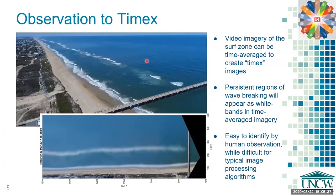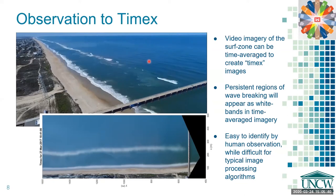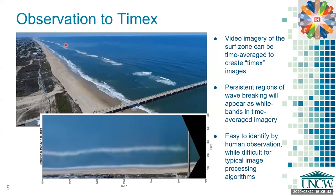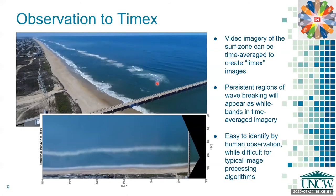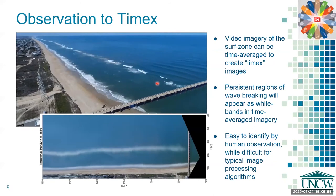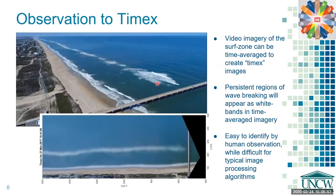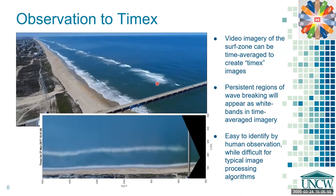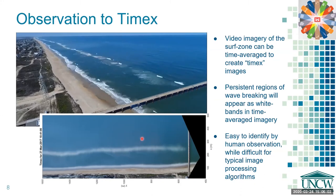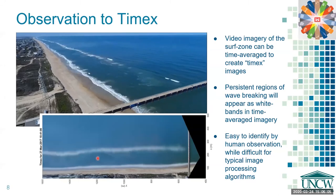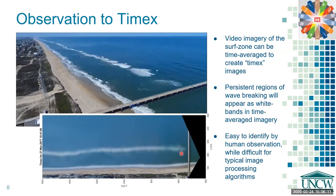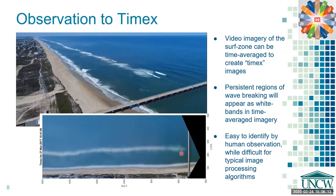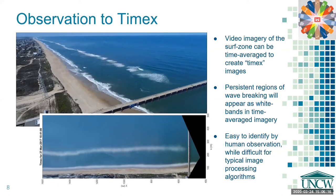Here you see an example movie from a UAV over Duck, North Carolina. You can see the waves breaking over the sandbar offshore because the water is shallower there. This video imagery of the surf zone is then averaged over long time scales — from anywhere from 10 minutes to entire days — to create Timex images. Persistent regions of wave breaking will appear as white bands in this Timex imagery. While these areas are easy to identify by human observation, it's more difficult for typical image processing algorithms to accurately capture these features.